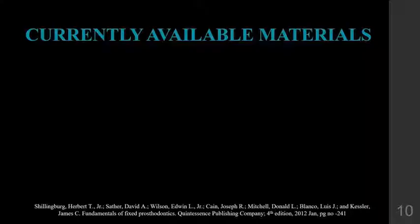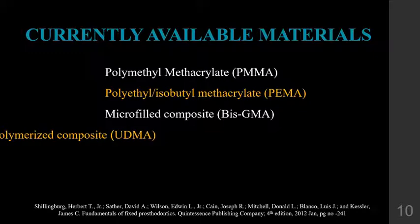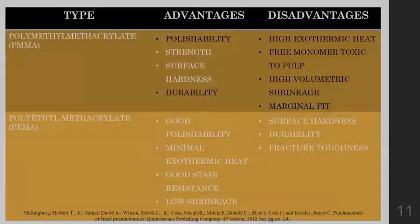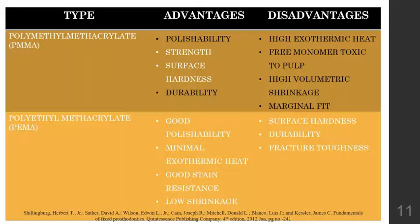Provisional materials can be divided into two groups based on chemical composition: monomethacrylates and dimethacrylates. Monomethacrylates are acrylic resins and dimethacrylates are composite resins. The currently available materials are polymethyl methacrylate, polyethyl methacrylate, microfil composite, and light-polymerized composite. Polymethyl methacrylate first appeared around the 1930s and remains the most frequently used material for interim restorations.